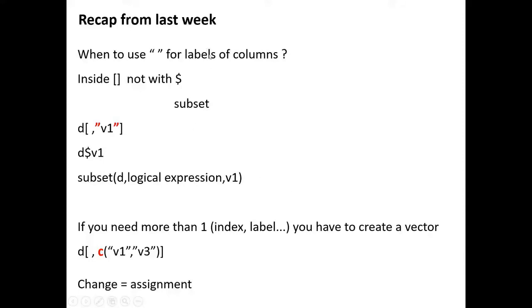When you use the name of a column inside the square brackets, you have to put that name in between quotes — single or double quotes, that doesn't matter, but it has to be in between quotes. However, when you use the dollar sign or the subset function to retrieve elements from a data frame, in these two cases you don't have to put the names of the column in between quotes. So here, this will retrieve the column called V1 inside square brackets, so you have to put the name in between quotes. Here you use the dollar sign, so the name doesn't have to come in between quotes. And inside the subset function you don't have to use quotes around the names of the columns either.